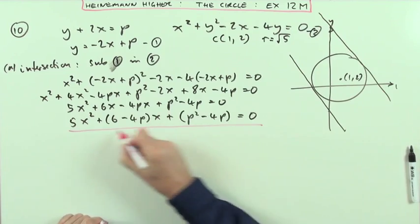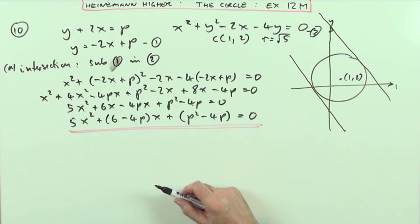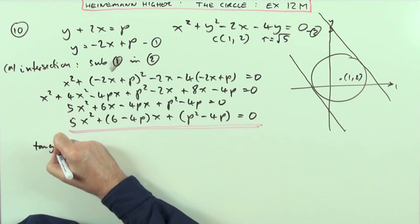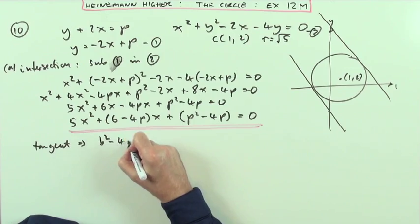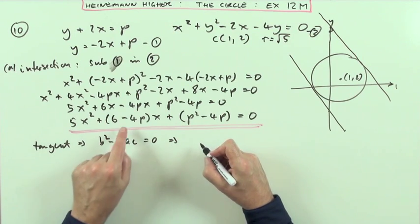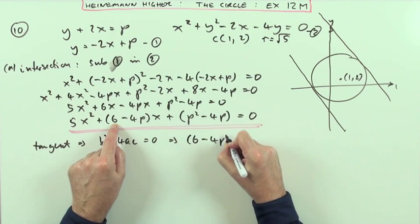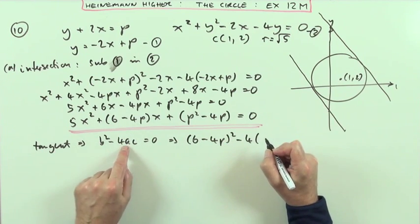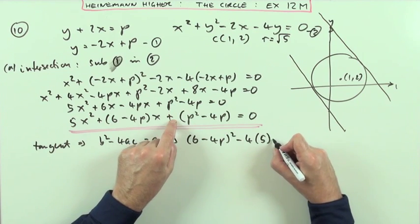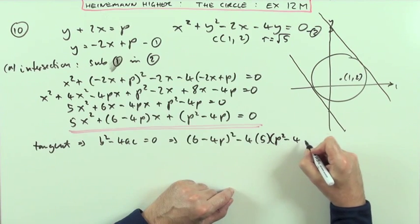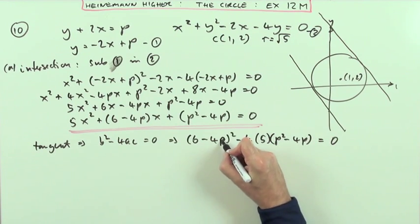Now, that's the equation for the intersections. So I'm going to say I'll have a tangent if the discriminant B squared minus 4ac equals 0. B being the coefficient of x, which is the 6 minus 4p, minus 4 times a, being the coefficient of x squared, which is 5, times c, being the constant on its own at the end, so that's this expression, p squared minus 4p. If that equals 0, when that equals 0, it'll be a tangent.